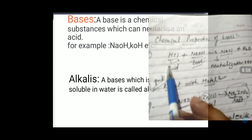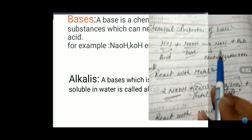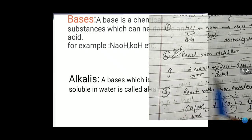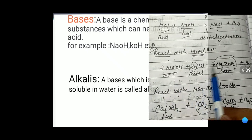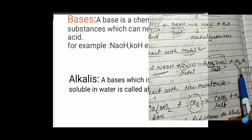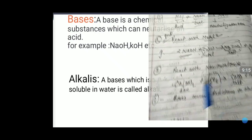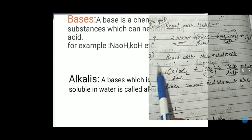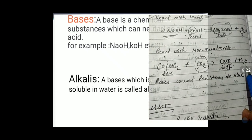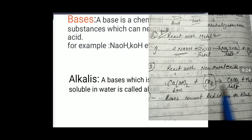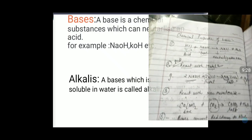Chemical properties of bases. First, when a base reacts with acid it forms salt and water. Second, when a base reacts with a metal it forms salt and evolves hydrogen gas. Third, when a base reacts with a non-metallic oxide it also gives salt. These are the chemical properties of bases.